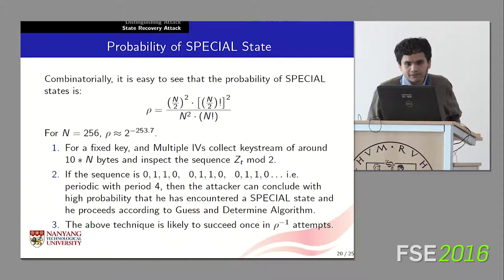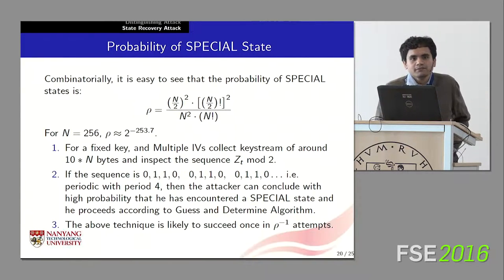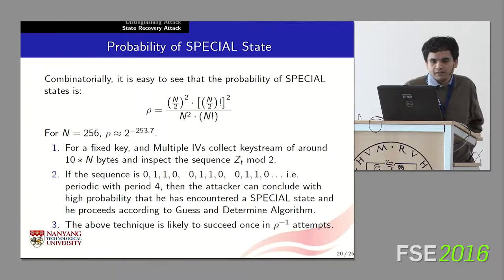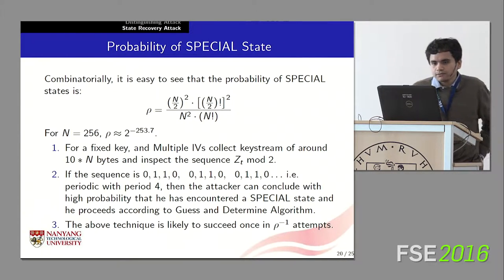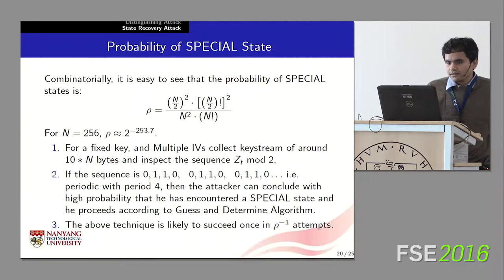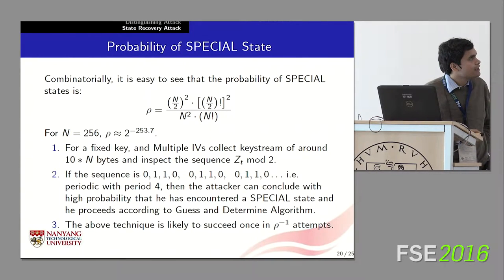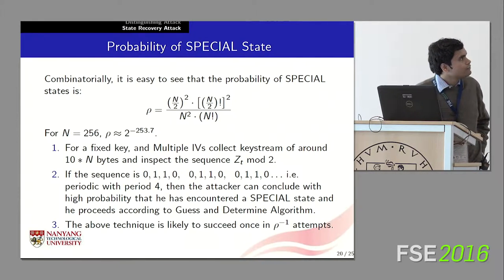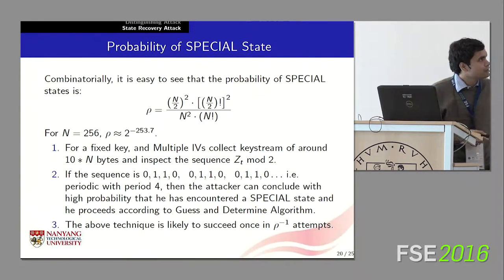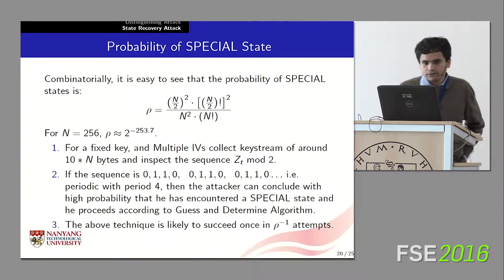If you start with a random key or a key and a random IV, the probability that the state entering the squeeze phase is a special state is given by the expression for ρ, which for N equal to 256 turns out to be approximately 2⁻²⁵⁴.